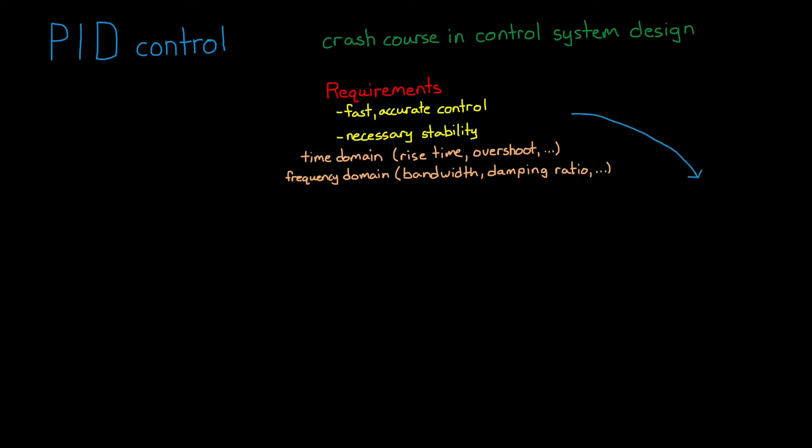Once you know what you're trying to accomplish, the next step is to understand the system that you're trying to control. Is it something that behaves like an integrator, like a motor? In which case you might not need an integrator in your controller. Is the open loop system stable? Is it highly non-linear? Is it non-minimum phase? And so on. Each of these characteristics will affect how you approach choosing an initial controller architecture and how you go about tuning.